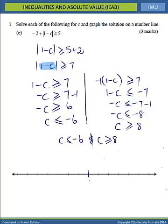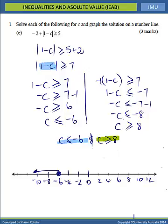Graphing this: firstly we have C is less than or equal to negative 6, so less than or equal to means a solid dot going to the left. Our second inequality has C is greater than or equal to 8, so again a solid dot, and because it's greater than we go to the right. That is the solution graph.